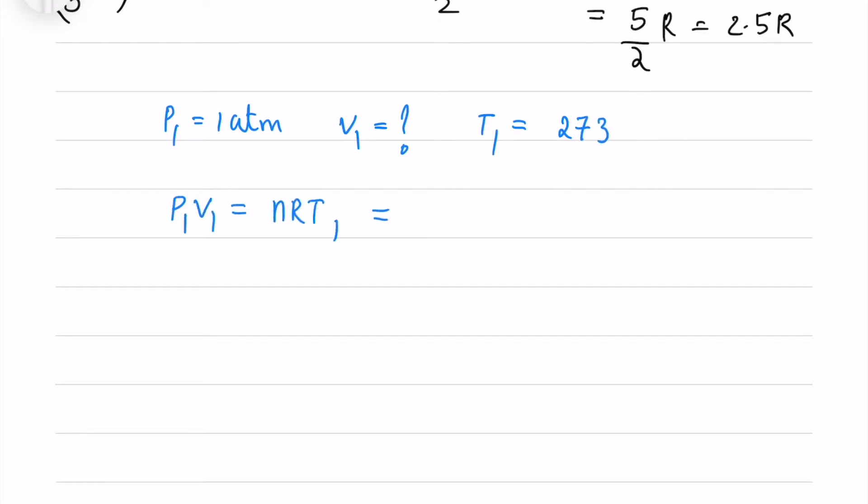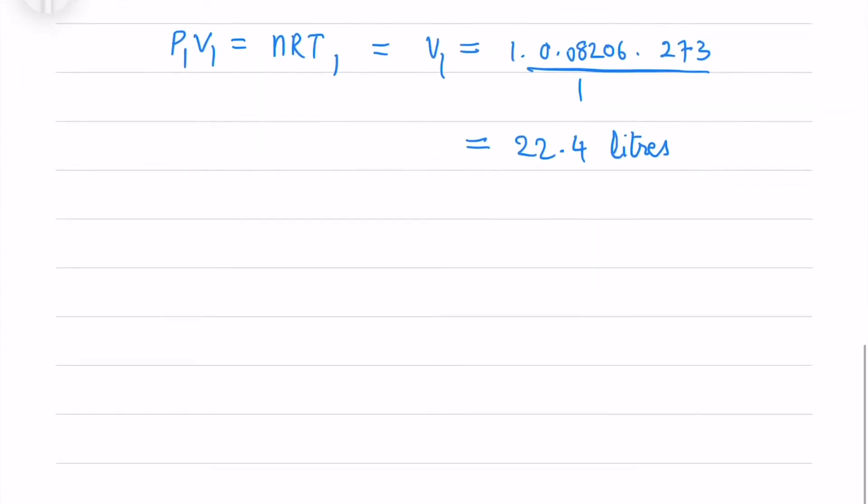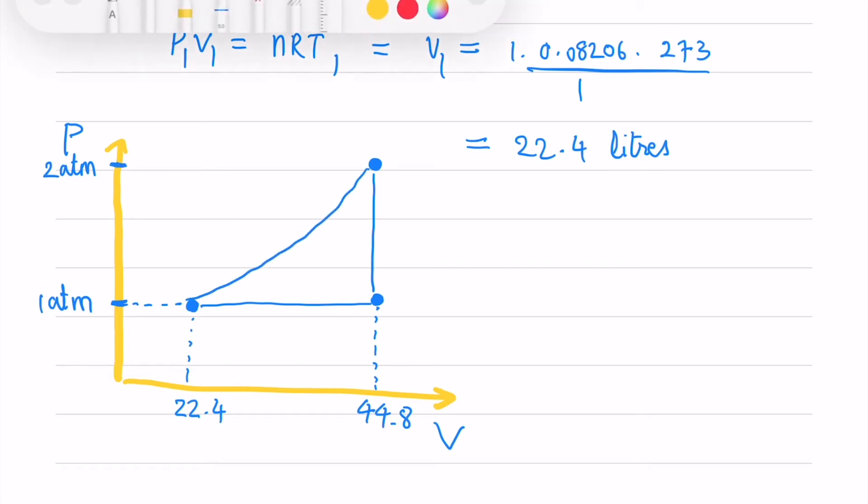So we will use ideal gas equation. So here we take R as 0.082 liter atmosphere Kelvin. So we will get volume in liters. Now I will draw the P versus V diagram. So in thermodynamics P versus V diagram helps us to get work done from the graph itself. So the area under the P versus V will give the work done. So the initial state has 1 atmosphere and 22.4 liters. And the final state has 2 atmospheres and 44.8 liters. And this is a random path.